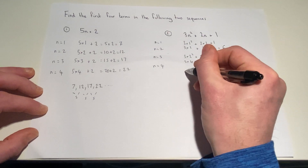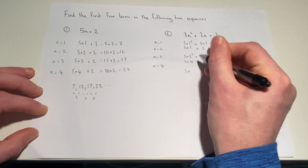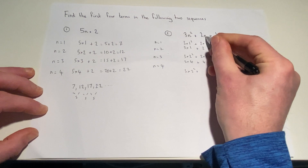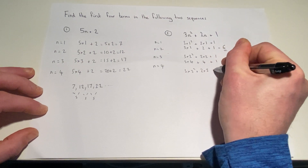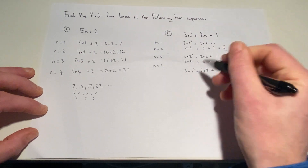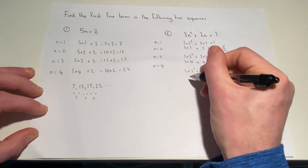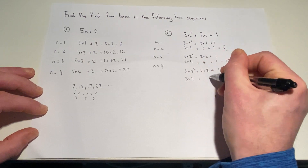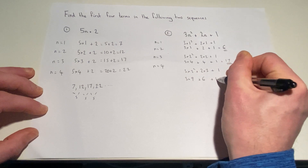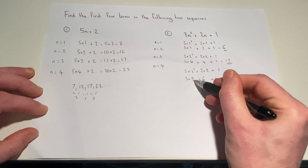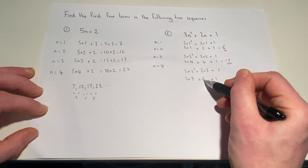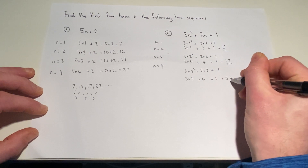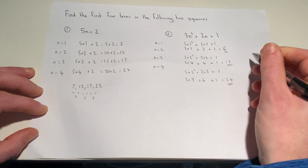Third term — we do 3 times 3 squared plus 2 times 3, add 1. Again, power first: 3 squared is 9, so it's 3 times 9. 2 times 3 is 6, add 1. 3 nines are 27, add 6 are 33, add 1 equals 34.